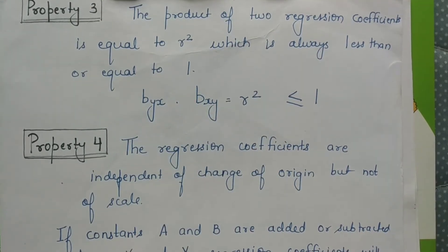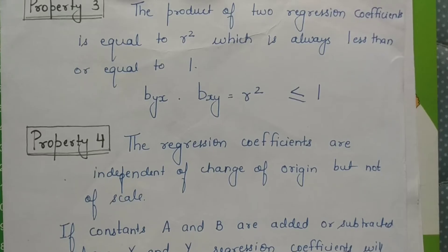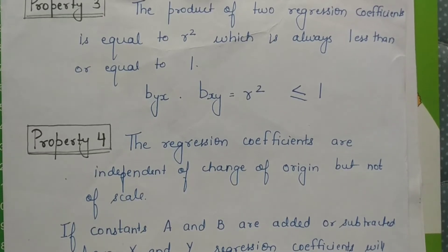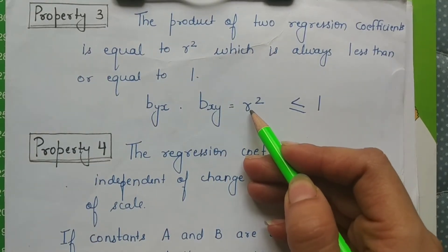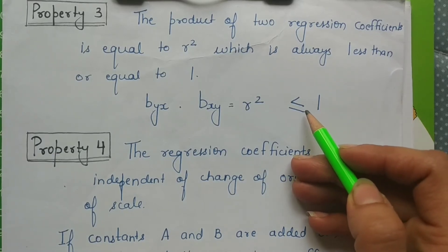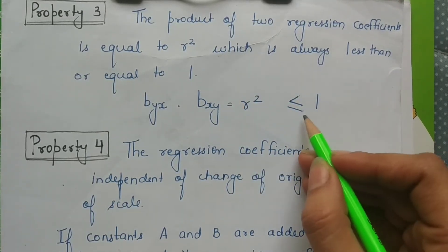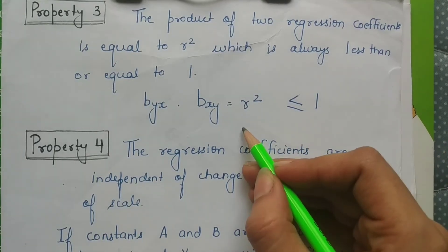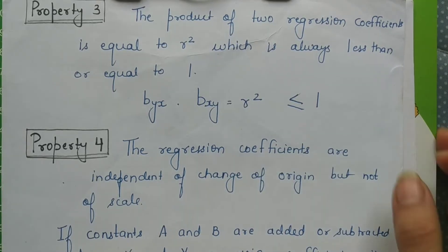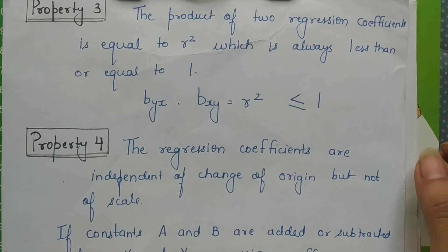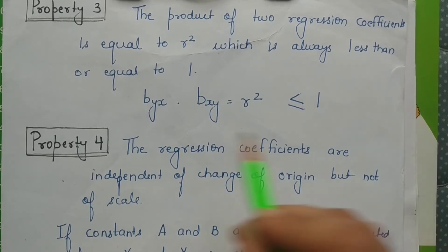Suppose you are given two equations and told they are regression equations but not told which is y on x and which is x on y. You can assume one to be y on x and the other to be x on y. When you solve them and find the regression coefficients, multiply them together. If the resulting r² is greater than 1, your assumed assignment was wrong. If r² is less than or equal to 1, your assumption was correct. I will also show how to use this property in my next video on typical problems of simple linear regression.